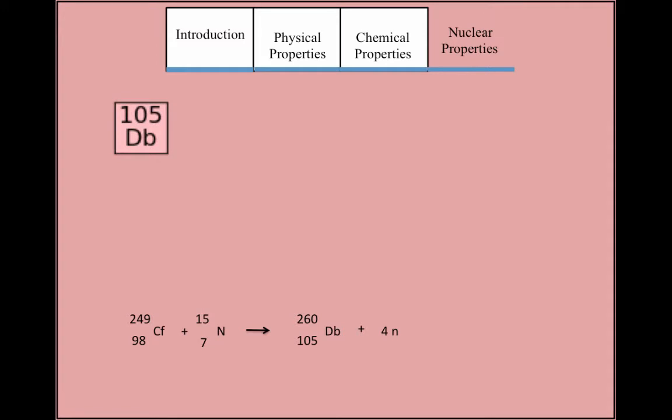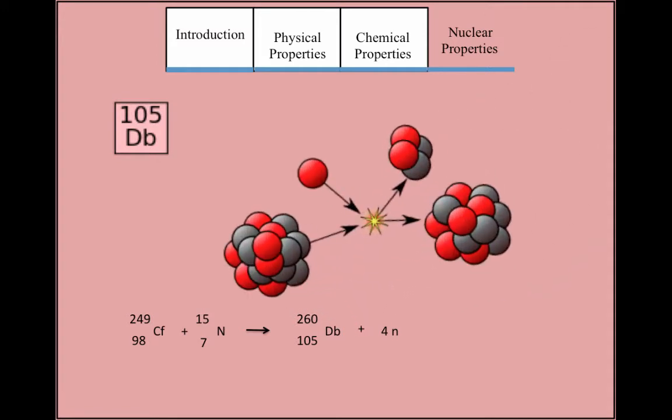The only nuclear property found in group 5B is dubnium, which is extremely radioactive and has only been produced in small amounts. Dubnium is created through nuclear bombardment of radiation such as alpha particles and is highly radioactive and extremely dangerous.